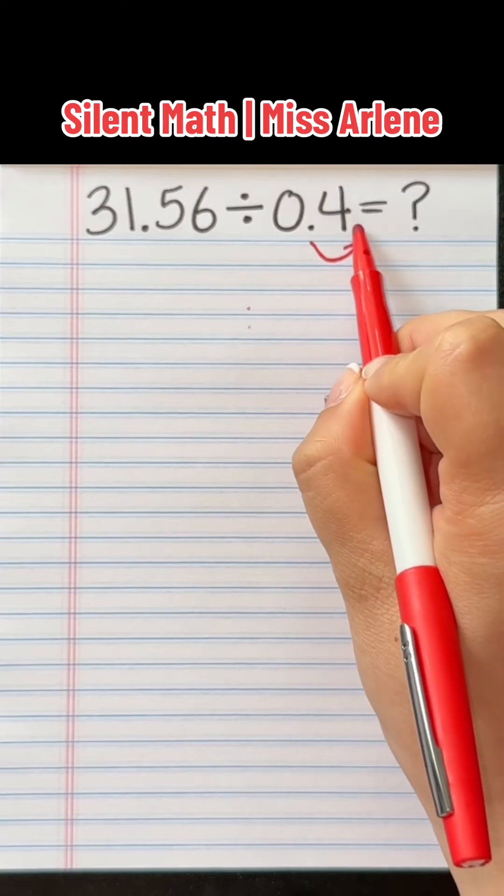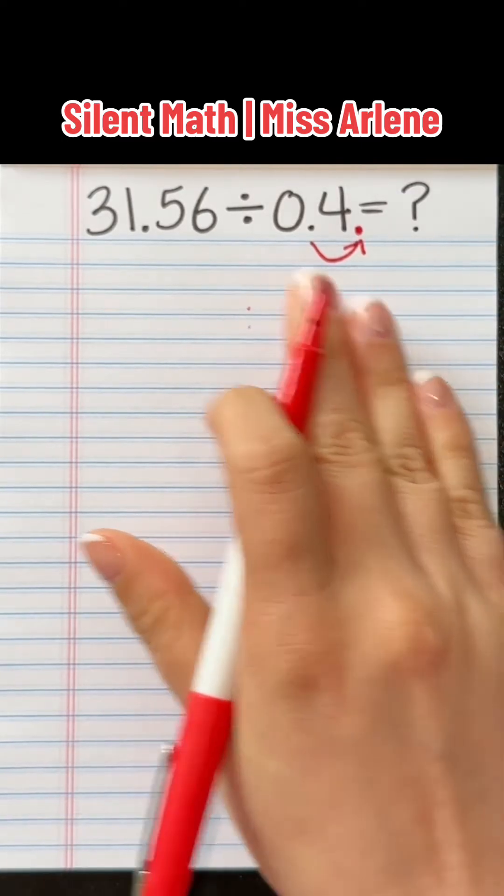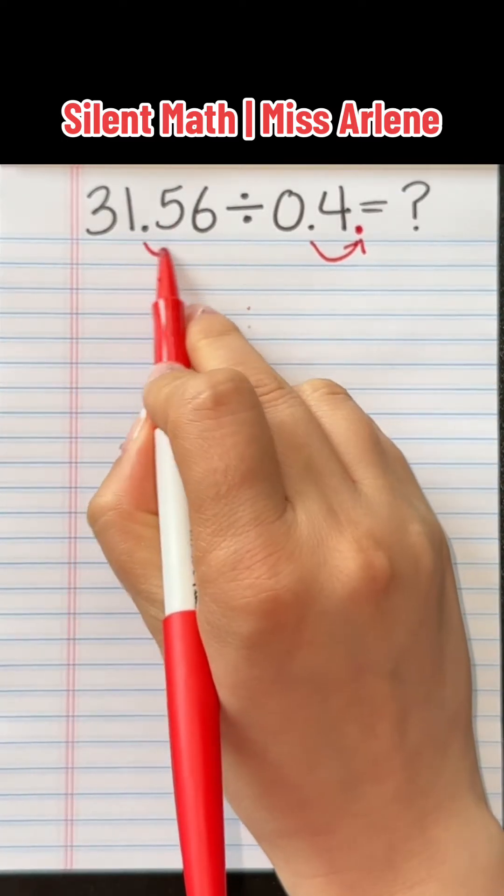So to do that, we move the decimal ones to the right. And once you change one number, you must also change the other because, you know, it gets jealous.